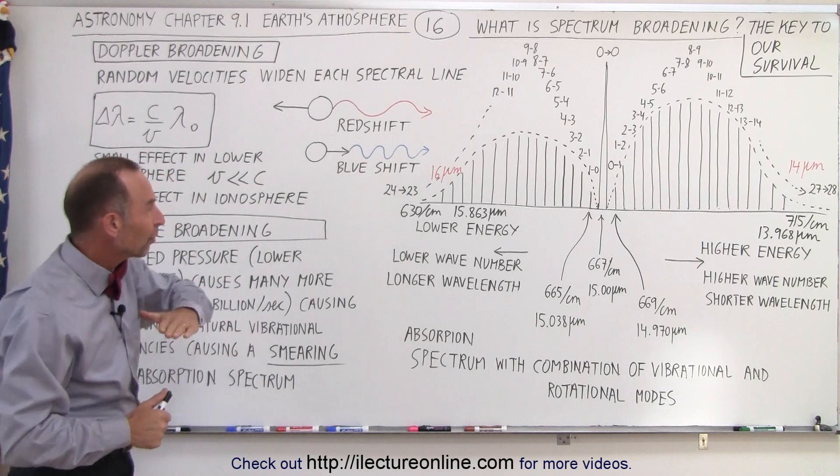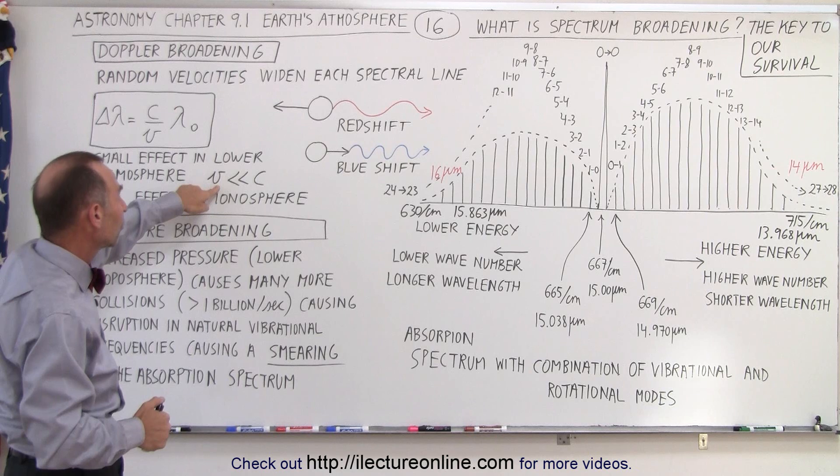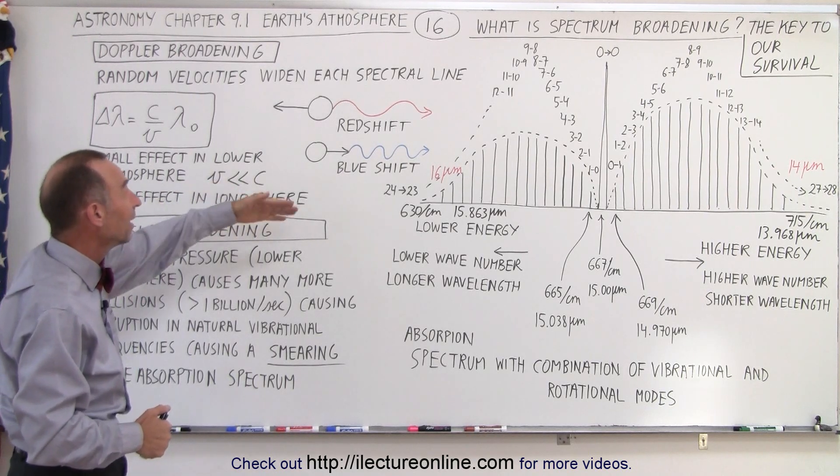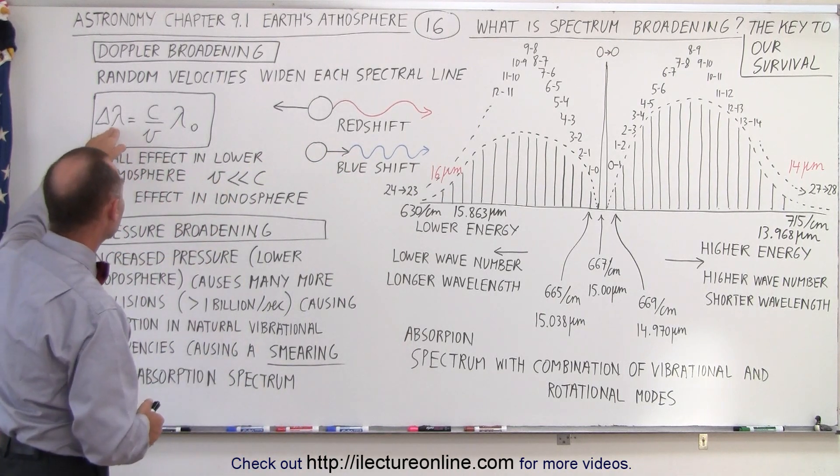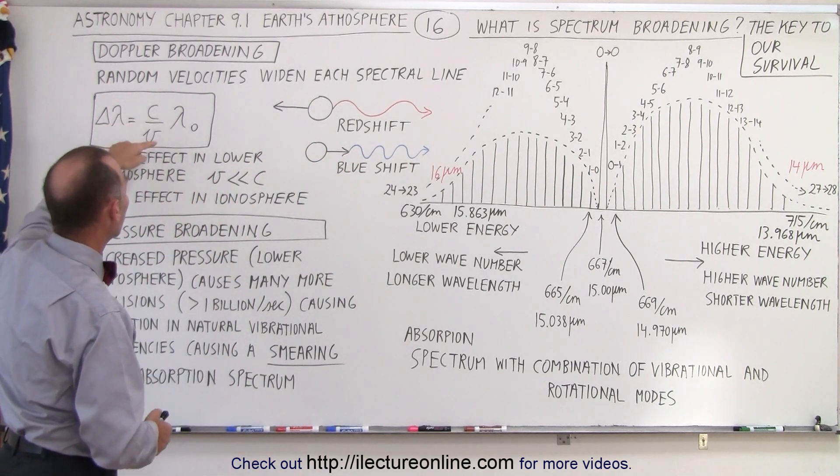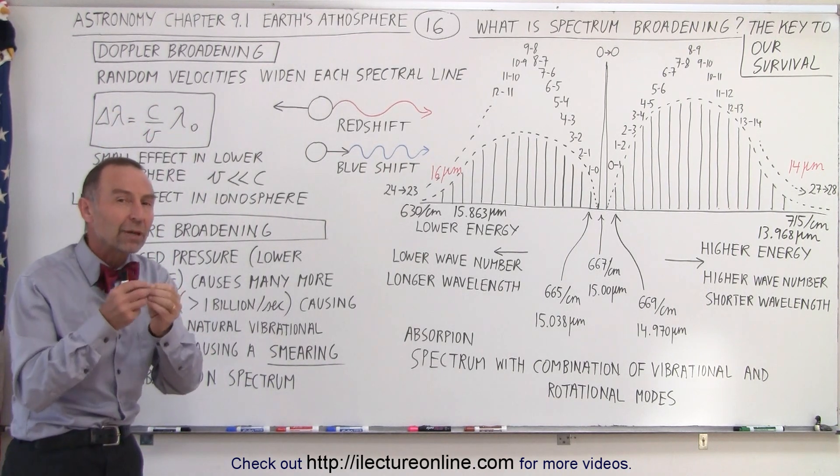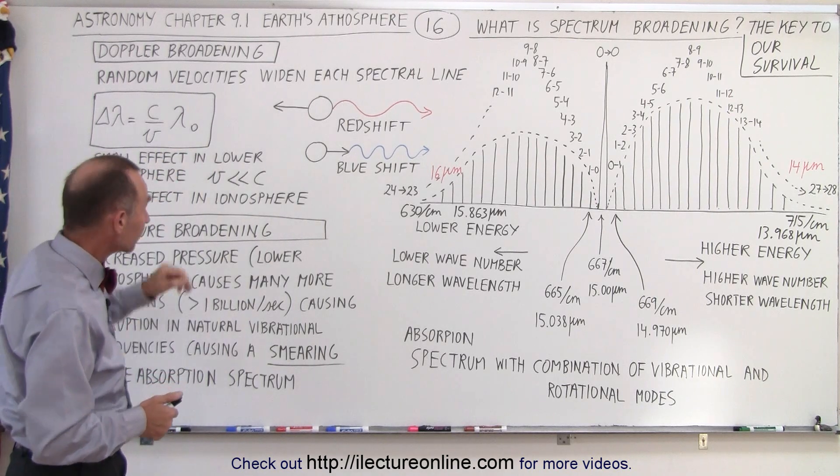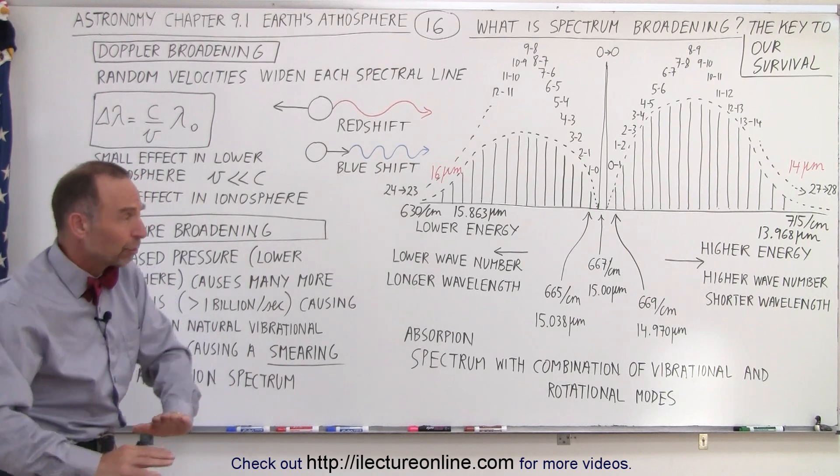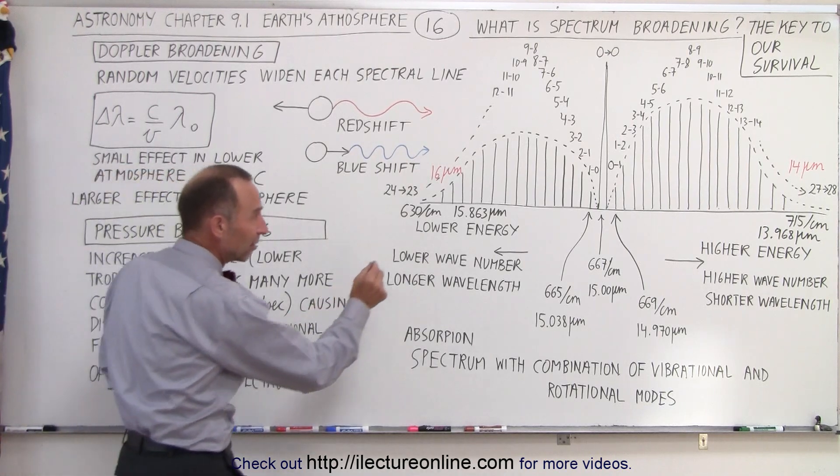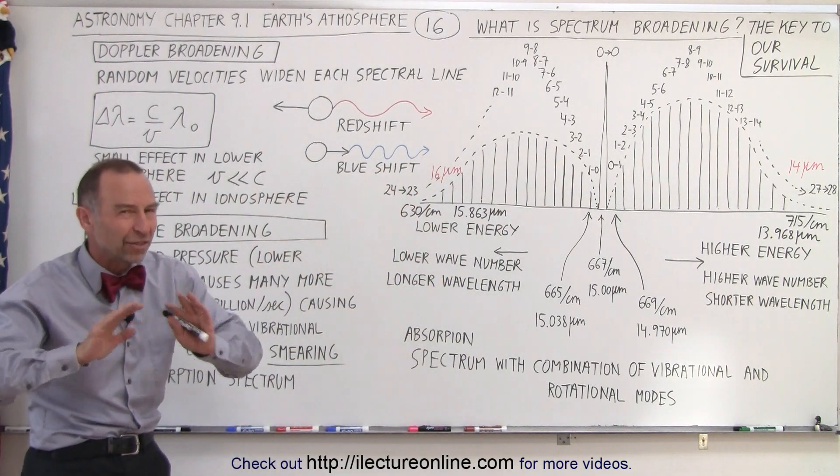But it turns out in the lower atmosphere, in the troposphere, this effect is fairly minimal, because the velocity of the molecules is much, much smaller than the speed of light, and of course the radiation moves at the speed of light. There's a small effect. We can calculate the change in the wavelength using this equation: the speed of light divided by the velocity of the molecules times whatever frequency or wavelength the molecules we're moving at. In this case, we're going to use the wavelength. And so in the lower atmosphere, in the lower troposphere, it's not much of an effect. It's a little bit. It widens the line just a little bit so we can absorb a little bit more energy, but it still wouldn't be enough.